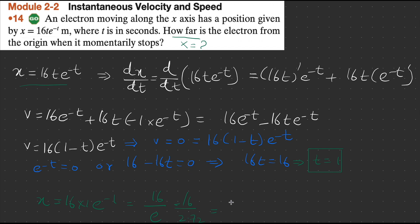This is the answer: x is approximately 5.9 meters. This is the position of the electron from the origin when it momentarily stops.